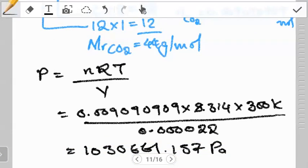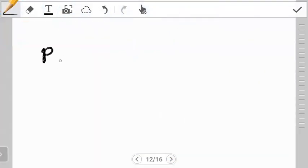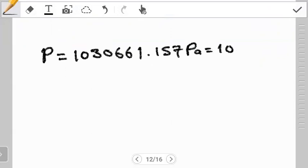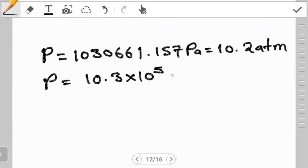Now we want to convert this to atm. We have to remember the relationship between a pascal and an atm. Once you convert, you should see that the pressure which is initially 1,030,661.157 pascals will be equal to 10.2 atm. Or if you don't want to write it in atm, you can still write it as 10.3 × 10⁵ pascals.